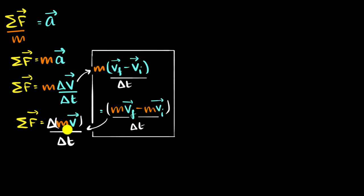And the letter we use for that is p, probably because m is taken for mass, right? So let's write that down. So net force acting on an object will now become change in momentum divided by the time taken for the change.